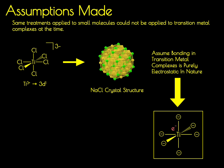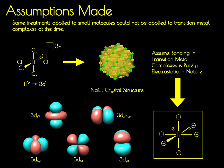Quantum mechanically, we describe electrons using wave functions, so that d electron can be described by using one of the five 3d orbitals: the 3d x²-y², dz², dxy, dxz, and dyz.